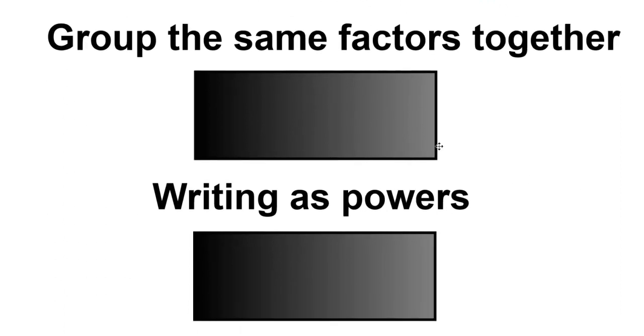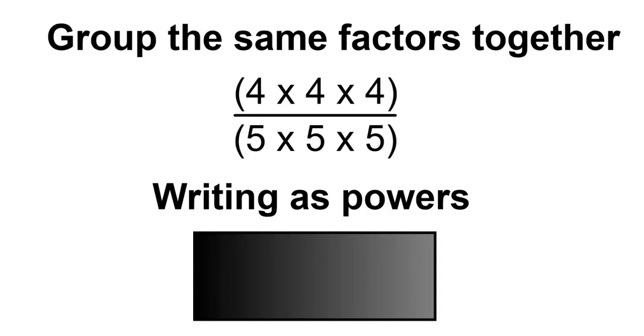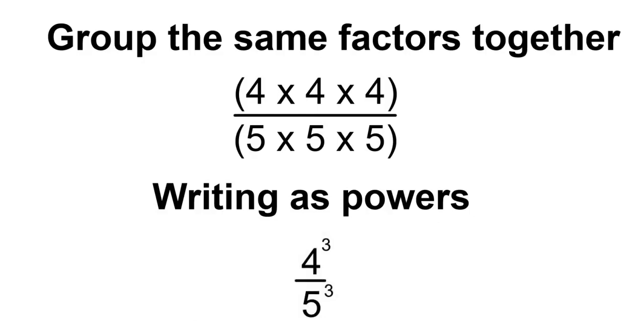Group the same factors together. This could be written as 4 times 4 times 4 divided by 5 times 5 times 5, and you can also write this as powers. This could be written as 4 to the 3 divided by 5 to the 3.